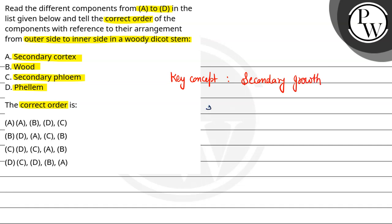Secondary growth se plant mein increase hota hai undi girth yaani plant ka diameter badhta hai. So agar hum dicot stem ki baat karein, to iske stem divided hoti hai into two regions. Outer one is called as the extrastelar region and the inner region is called as the intrastelar region.